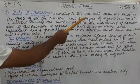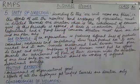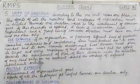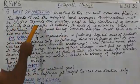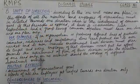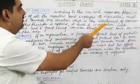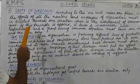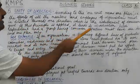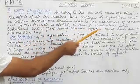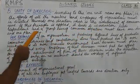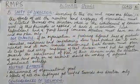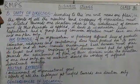According to this principle, one unit means one plan — that is, the efforts of all the members and employees of an organization must be directed towards one direction, which is the achievement of a common goal. If this principle is applied, it leads to coordination. Each department and group having a common objective must have one head and one plan only.